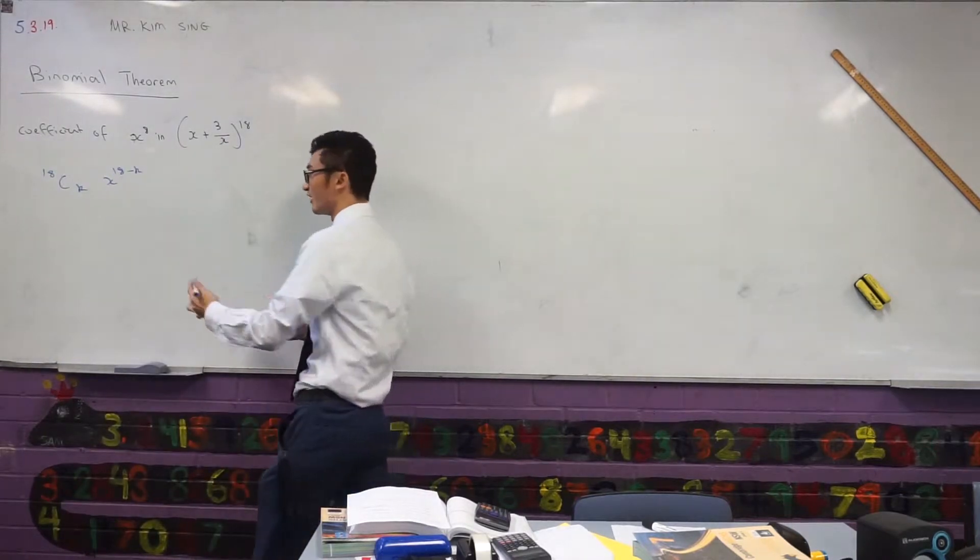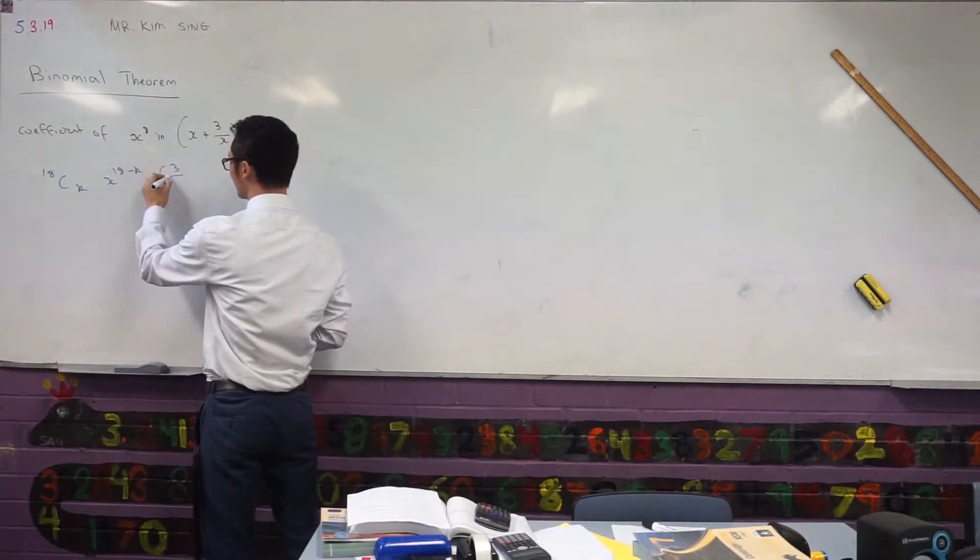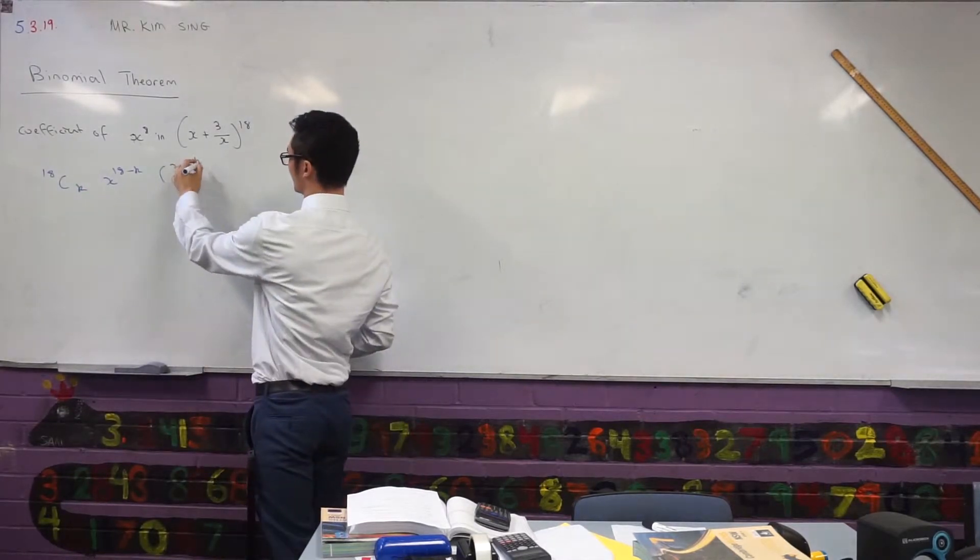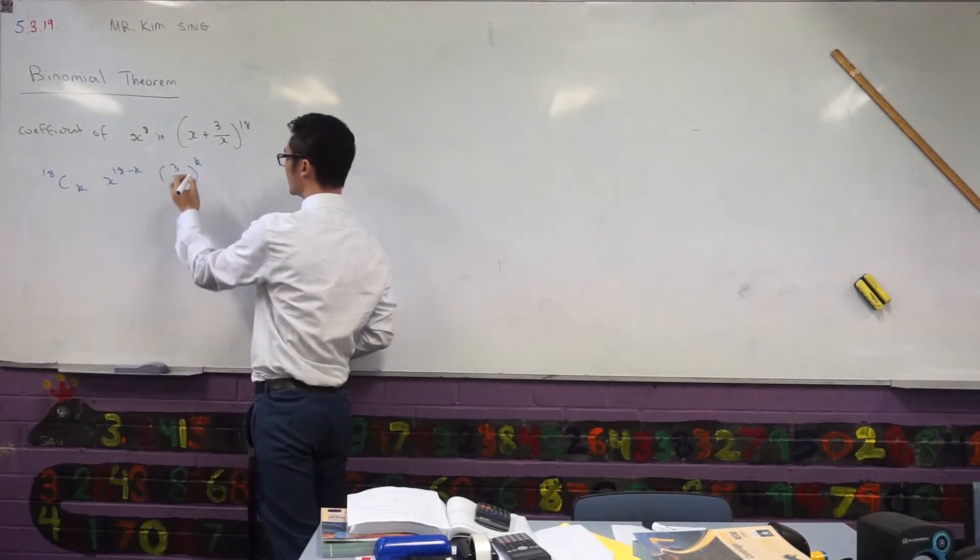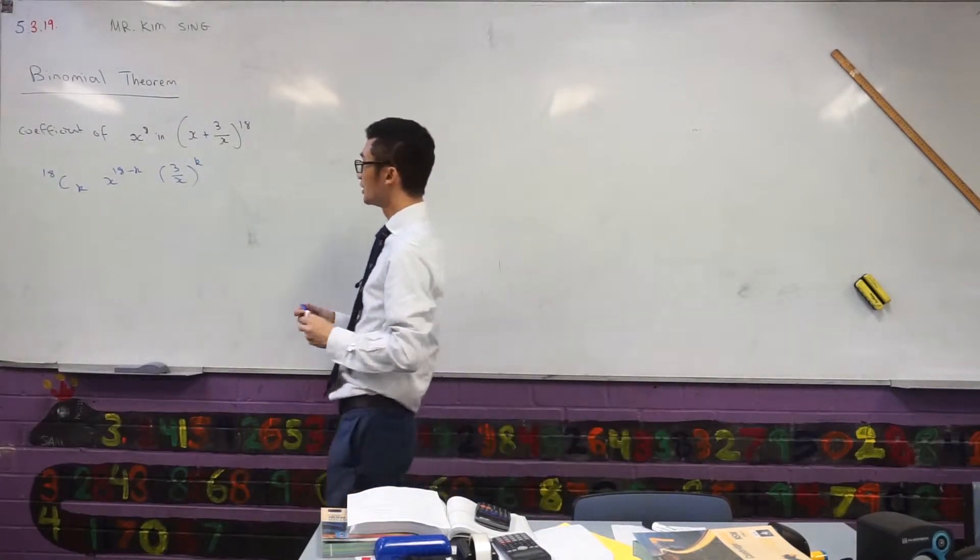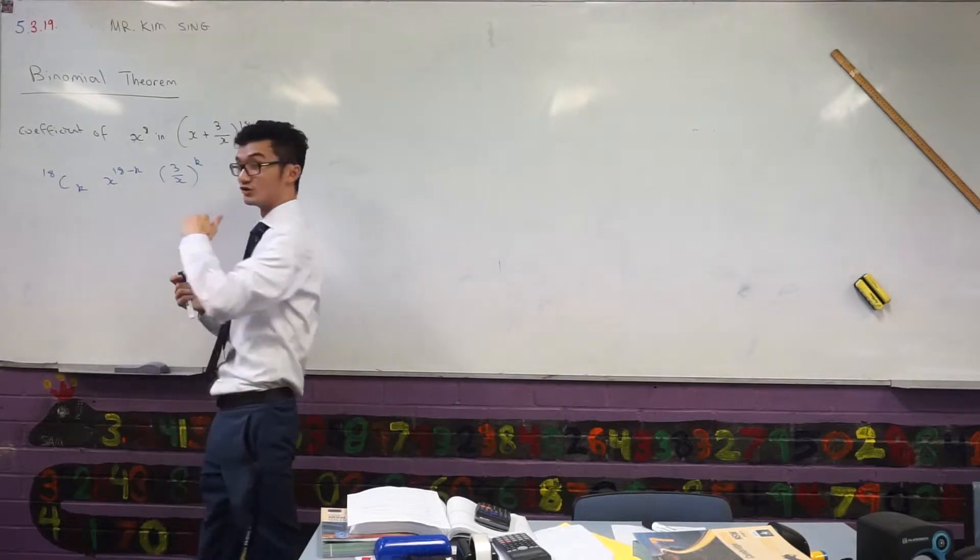Now the second term is a fraction there. That's okay, we'll work with that. It's 3 over x and that's all to the power k. That's our general term. So I always say any time we're looking for a specific term or a coefficient, then we'll write out the general term first and go from there.